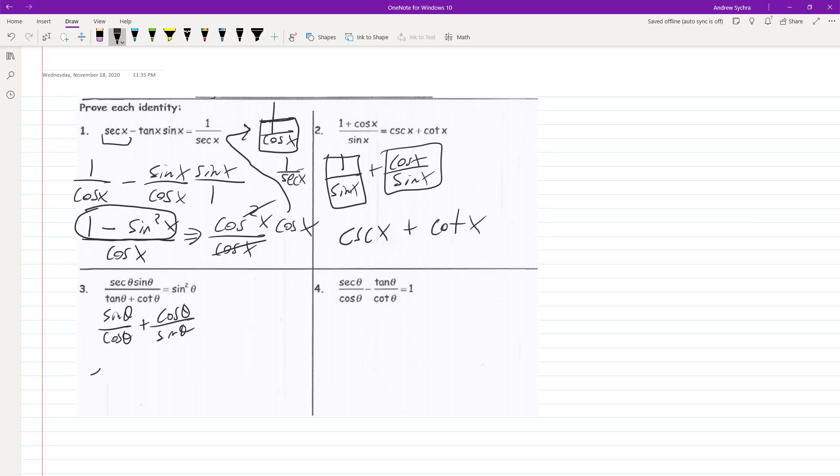So we end up with sine squared theta over sine theta, cosine theta. I'm just working with a denominator right now, plus cosine squared theta. Sine theta, cosine theta. And because they have the same denominator, we can combine them now.